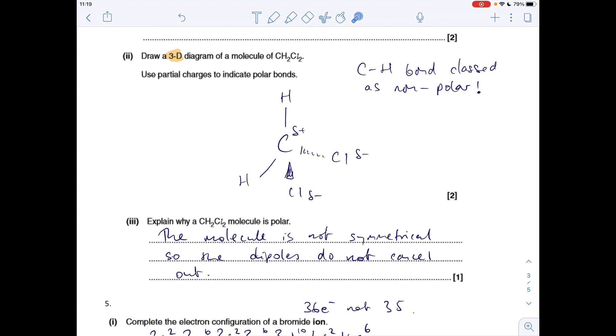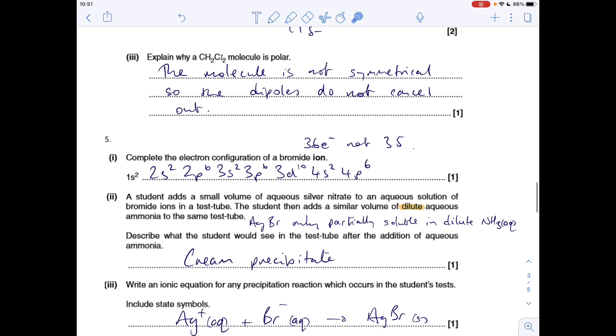Number five, the electron configuration of a bromide ion. So it's got 36 electrons, it's gained an electron. The atom's got 35, so all of that. And again they can be done either way around.